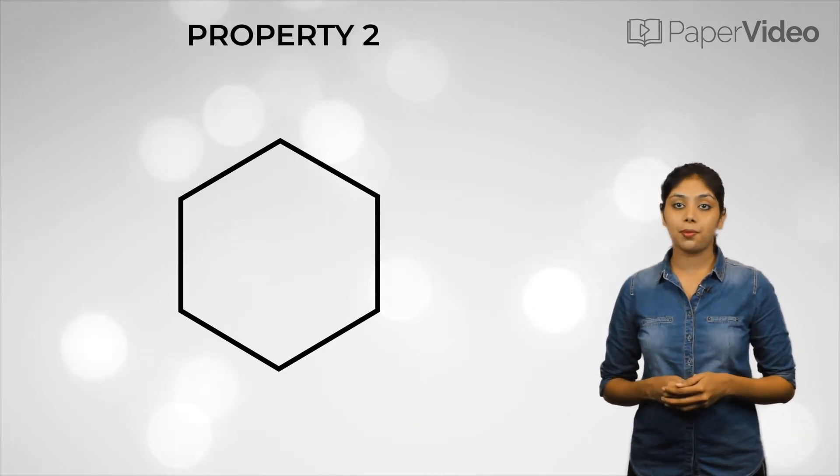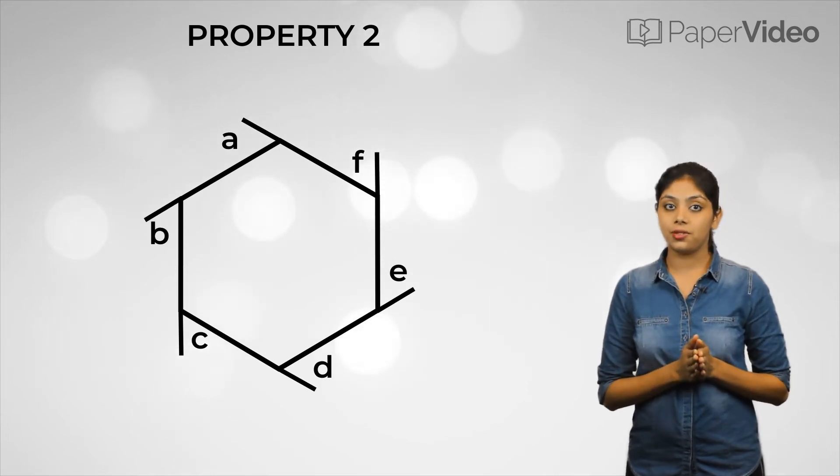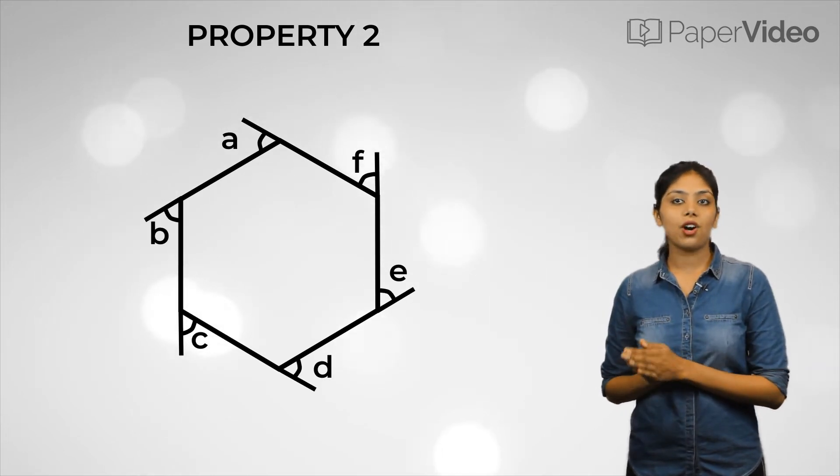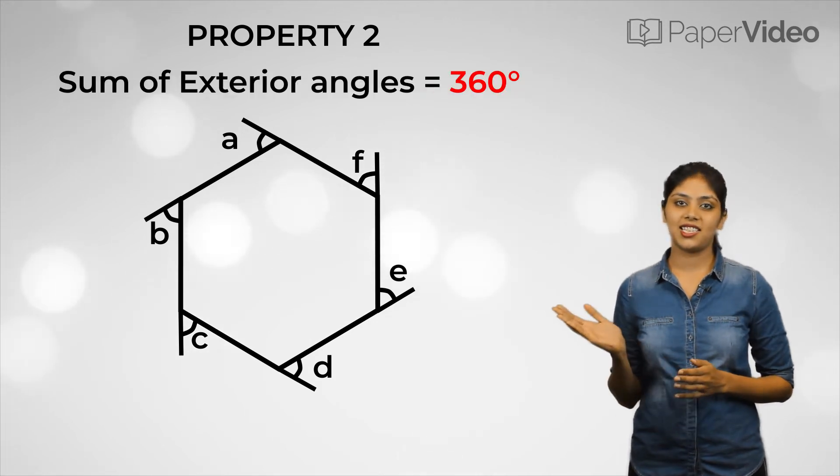According to the second property, if the sides of a polygon are produced, then the sum of all exterior angles so formed is 360 degrees.